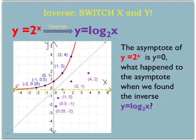Remember, exponential functions have an asymptote of y equals 0. Now if we're switching the domain and range, what do you think the asymptote is going to be for the logarithmic function? Well, just like everything else, we're switching x and y, so the new asymptote is going to be x equals 0. So the asymptote of the logarithmic function is x equals 0.